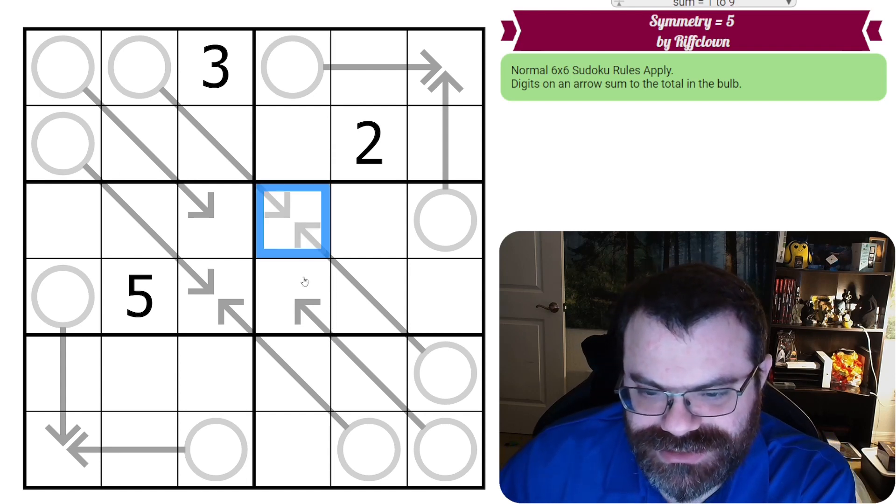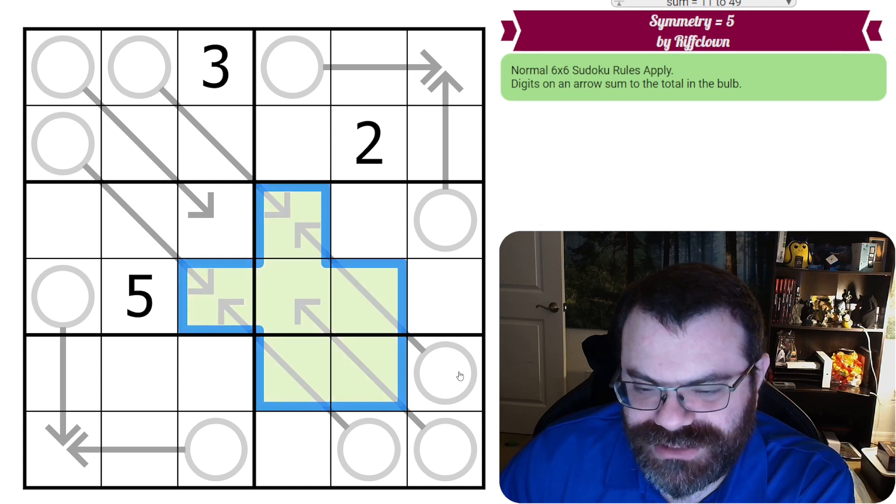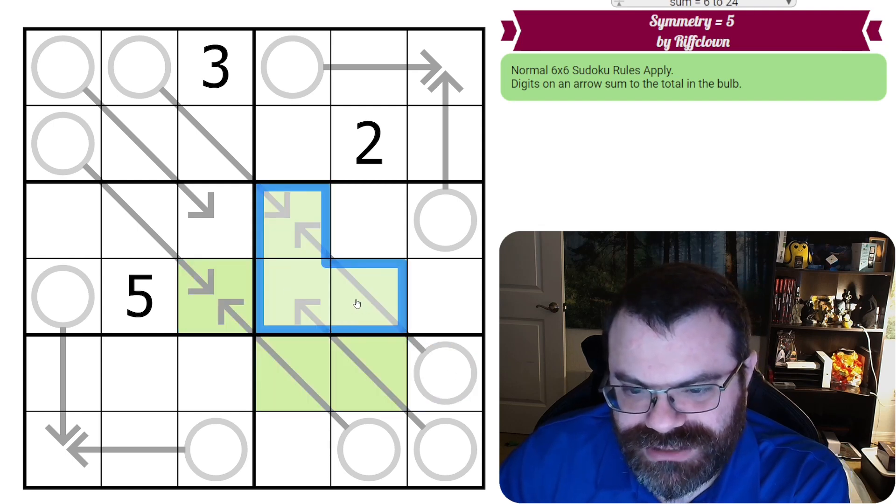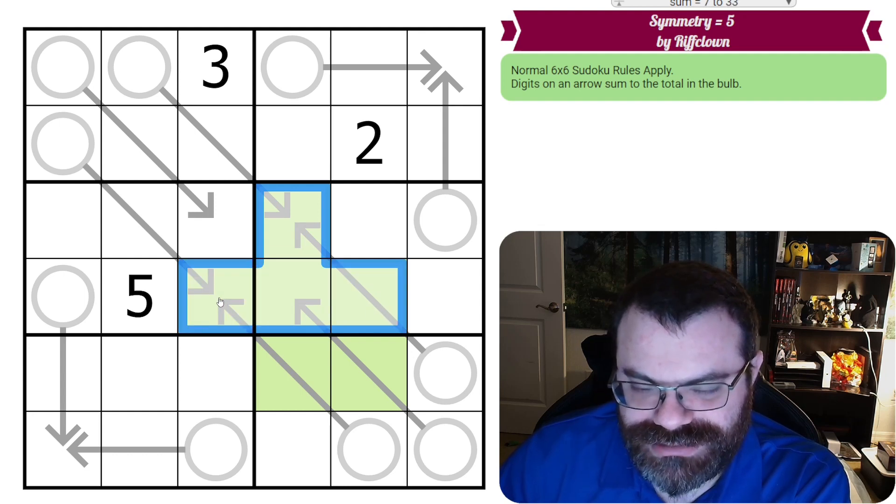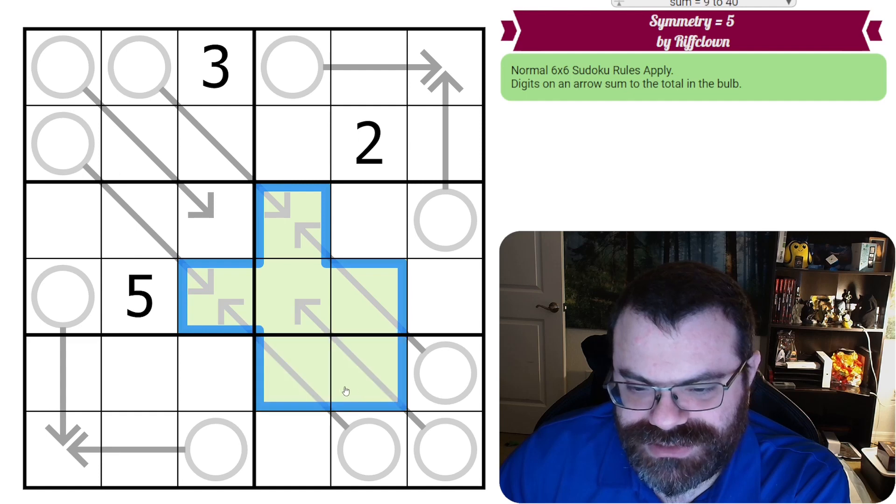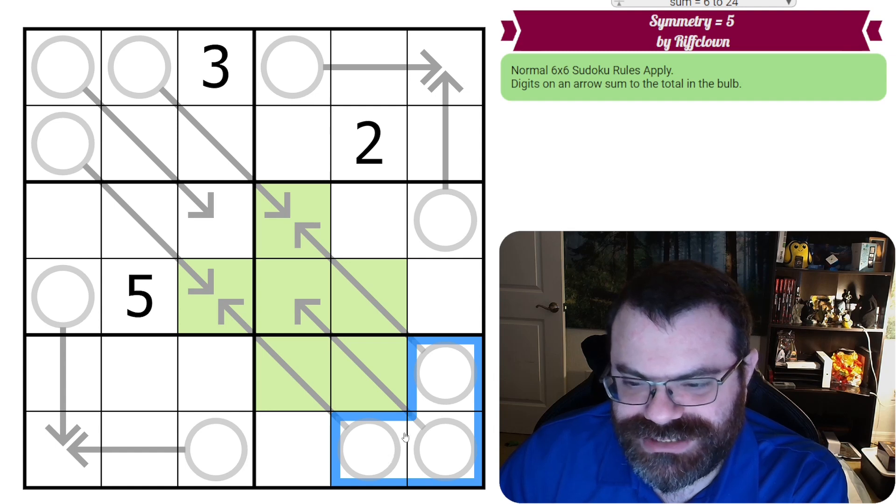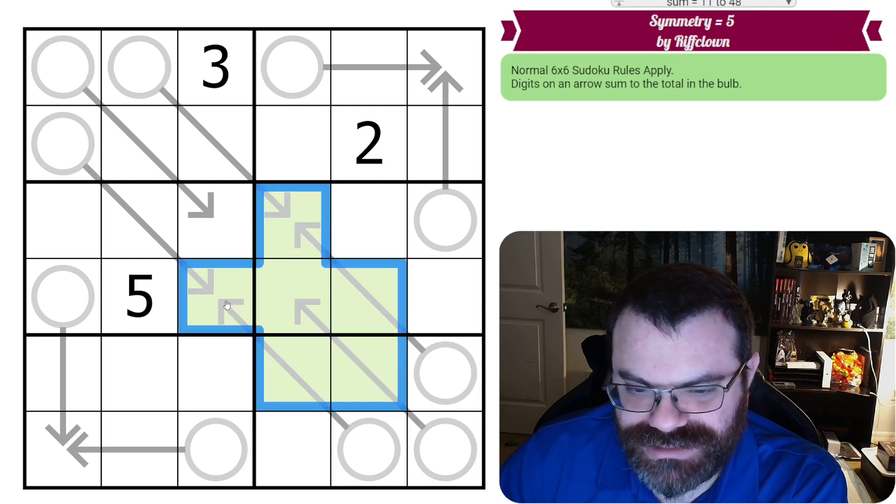Let's think about these arrow cells here. I'm going to even color them. Let's make them green. So what is the minimum these can sum to? So this could be 1, 2, 3 adding to 6. This could be a 1 adding to 7. And then this could be 1 and 2 adding to 3, so that's 10 in total. So these 3 have to add to at least 10 altogether. That's not hard, so we need to look at something else.